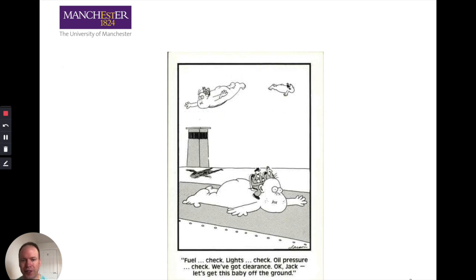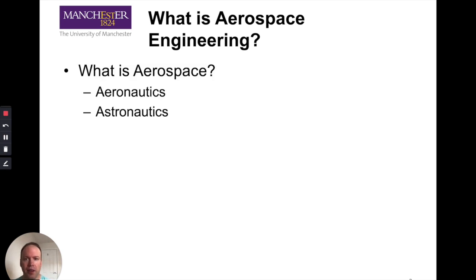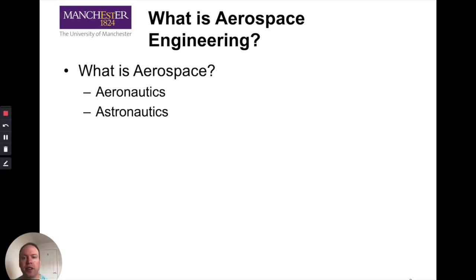I'll leave you to think about this for a second. What is aerospace engineering? To understand that question, first we must ask what do the words themselves mean? What is aerospace? Aerospace is typically made up of two fields: aeronautics and astronautics. Let's dissect these words. Aero means in the atmosphere, and astro means in space, and nautics is the travel through, or building of things that travel through, air and space.